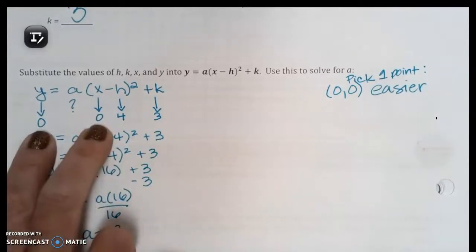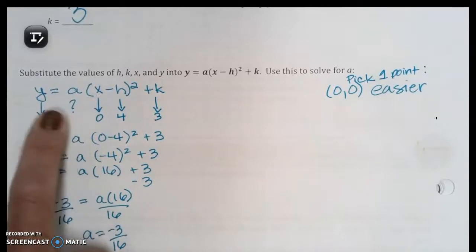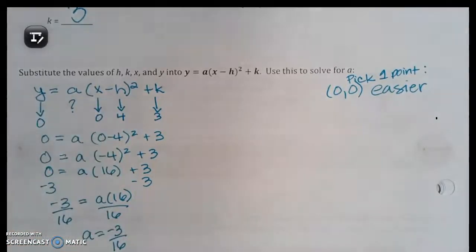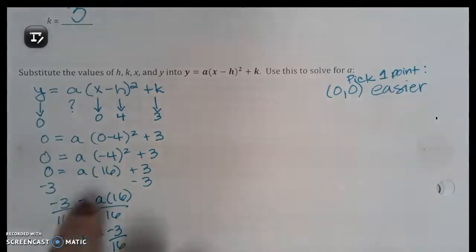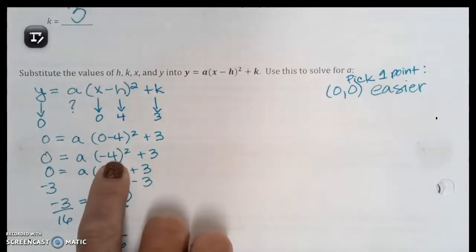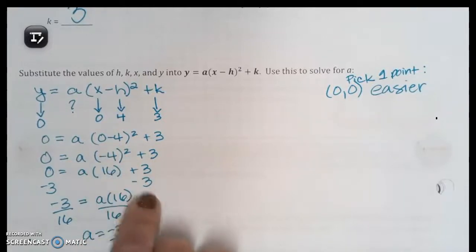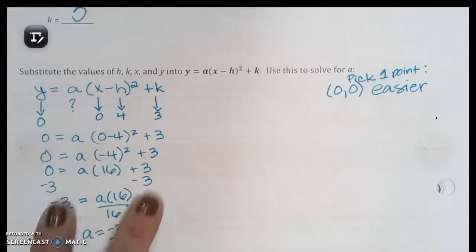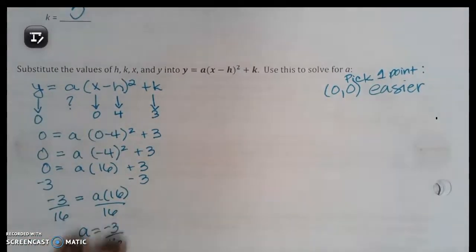And then I used (0,0). Notice that everything gets plugged in except what? The a. All of the values: y gets plugged in, x gets plugged in, h gets plugged in, and k gets plugged in. The only thing that doesn't get plugged in is the a, and that's what you want to solve for. So you're going to follow order of operations, right? Make sure you follow order of operations. So you've got a set of parentheses: 0 minus 4 squared. 0 minus 4 is negative 4. Negative 4 squared is 16.